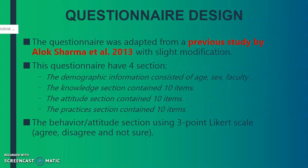The questionnaire design was adapted from a previous study by Alok Sharma et al. with slight modifications. This questionnaire has four sections: demographic information consisting of age, sex, and faculty; the knowledge section; attitude section; and the behavior/attitude section using a three-point Likert scale which is agree, disagree, and not sure.